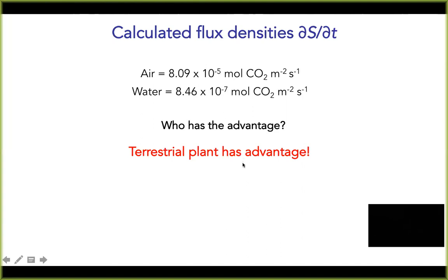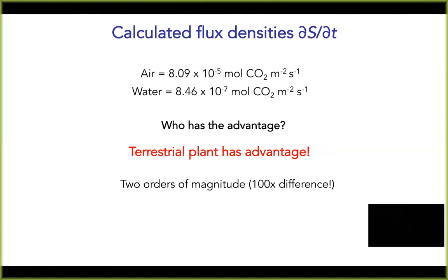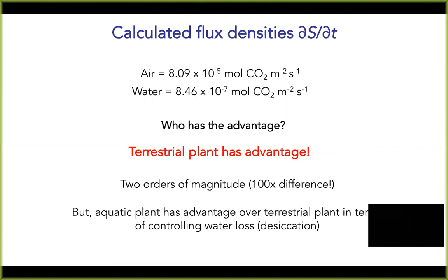So if you are a multicellular aquatic plant that somehow also had the ability to perform photosynthesis in the air, your photosynthetic rates are going to be two orders of magnitude higher on land than in the aquatic environment. But the aquatic plant has the advantage over the terrestrial plant in terms of controlling water loss — if you live in water, you don't have to worry so much about desiccation. There's a fundamental trade-off: a terrestrial plant will have a much higher photosynthetic rate per unit volume, whereas an aquatic plant will have a much better way of controlling desiccation.